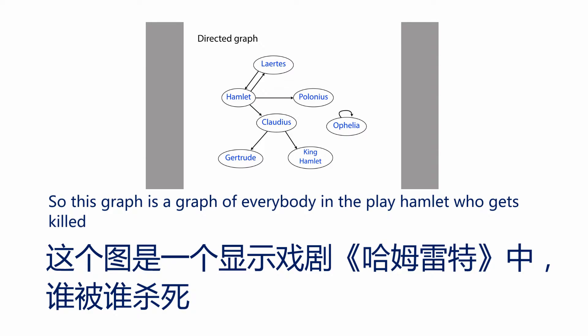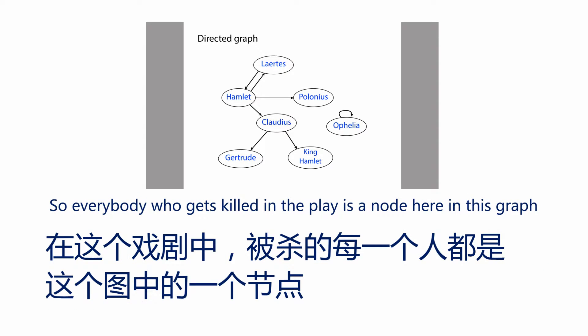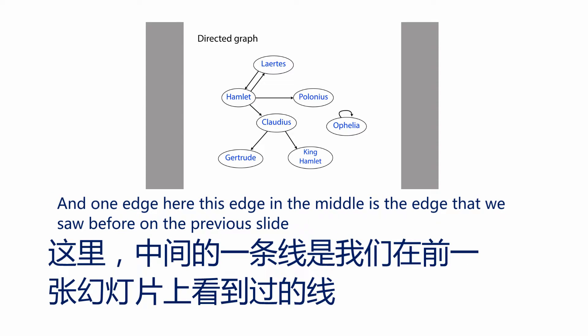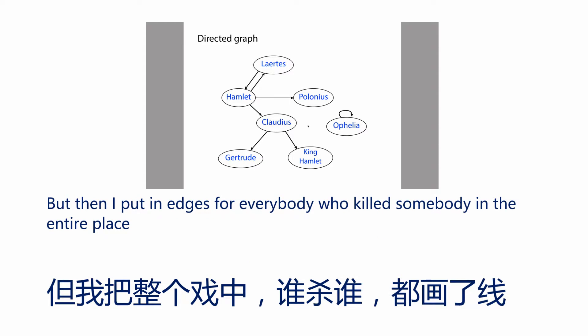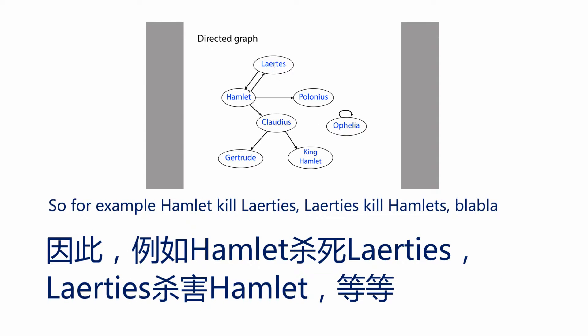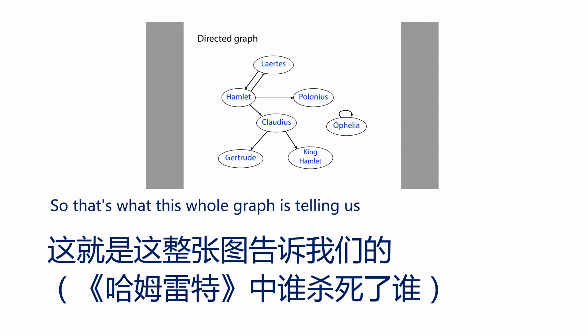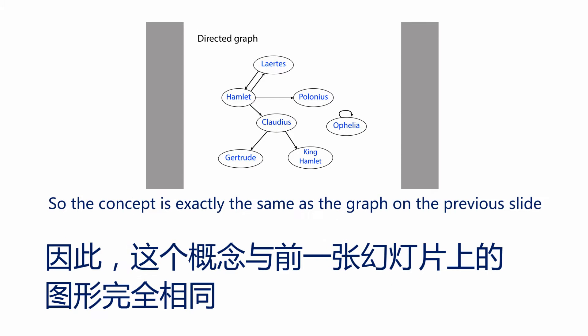This graph shows everybody in the play Hamlet who gets killed. Everybody who gets killed is a node, and the edges represent who kills whom. The edge in the middle is the one we saw before, but now I've added edges for every killing in the entire play — for example, Hamlet kills Laertes, Laertes kills Hamlet, and so on. The concept is exactly the same as the graph on the previous slide.